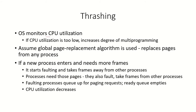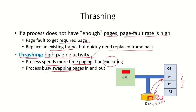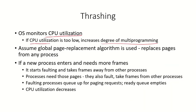The operating system monitors CPU utilization. If the utilization of the CPU is low, the operating system thinks the CPU does not have too much work and the processes do not require the CPU, so it will increase the degree of multiprogramming. If the OS thinks the CPU is lying idle, it will bring another process into main memory by taking frames which have been allocated to existing processes, using a global page replacement algorithm.